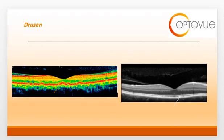Let's start with the topic of drusen. Drusen are focal yellow or white deposits of extracellular debris located between the retinal pigment epithelium and Bruch's membrane. They occur naturally with age and usually do not cause symptoms. Drusen may range in appearance, size, and location.